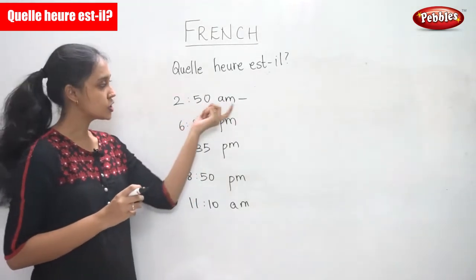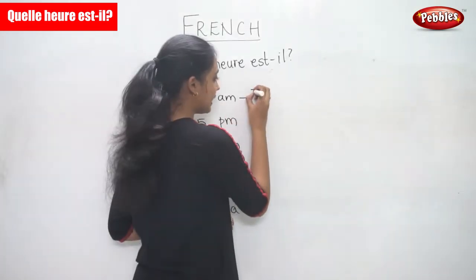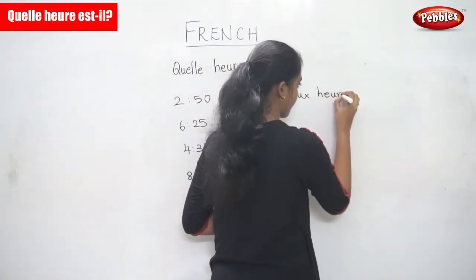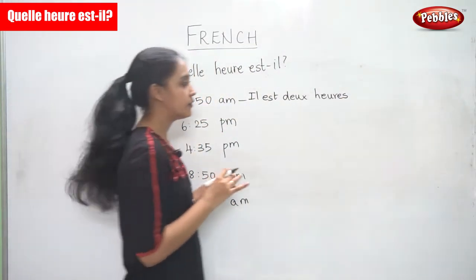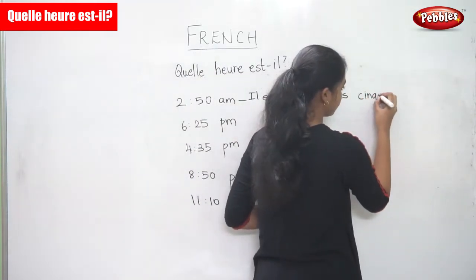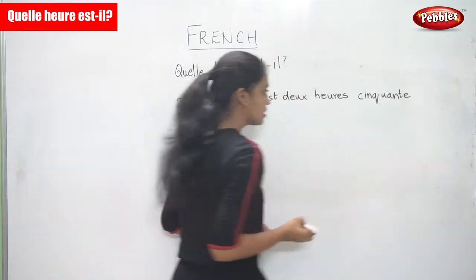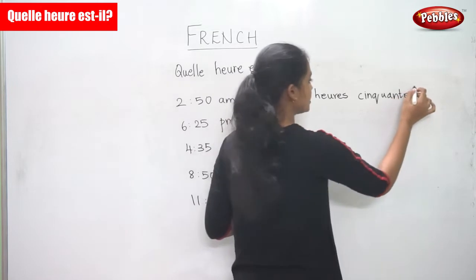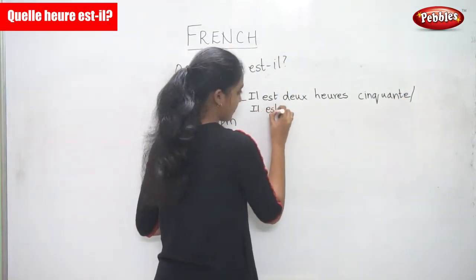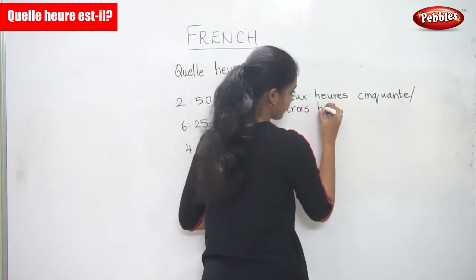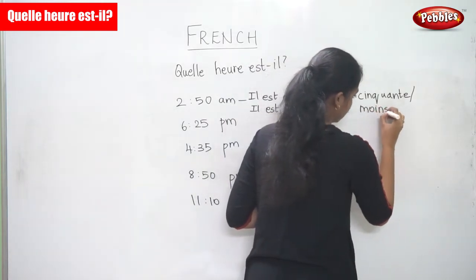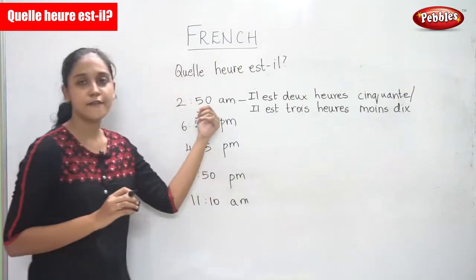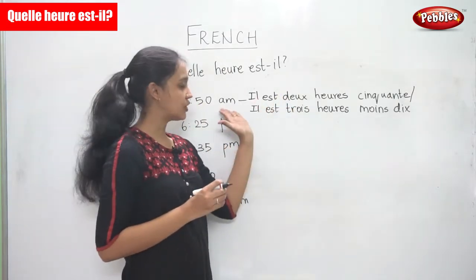2:50 AM. Since it is AM, it is 'il est deux heures cinquante.' Cinquante means fifty. So 'deux heures cinquante.' Or there is another way to write it, which is 'il est trois heures moins dix' — it is 3 hours minus 10. So these are two ways in which you can write the first one.